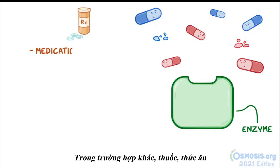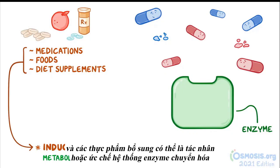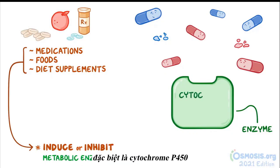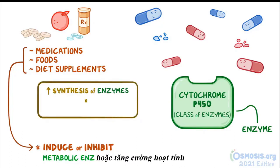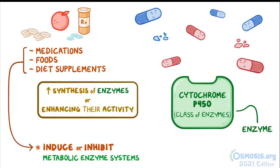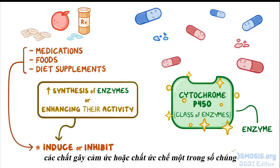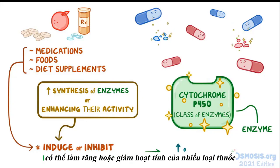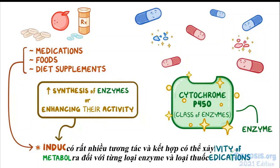In other cases, medications, food, and even diet supplements might induce or inhibit metabolic enzyme systems, particularly the cytochrome P450 — either by increasing the synthesis of these enzymes or enhancing their activity so they metabolize more quickly. Since these enzymes are involved in either activating or inactivating multiple medications, inducing or inhibiting one of them could potentially increase or decrease the activity of multiple medications. In other words, there are tons of possible interactions and combinations for each enzyme and medication.